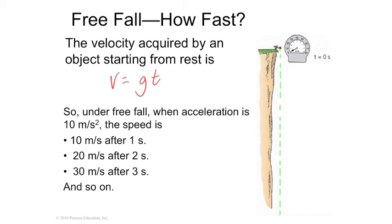After one second, it's 10 meters per second. After two seconds, it's 2 times 10. So it's 20. After three, it's 3 times 10. It's 30. So you can guess the velocity, V equals GT, G is gravity.